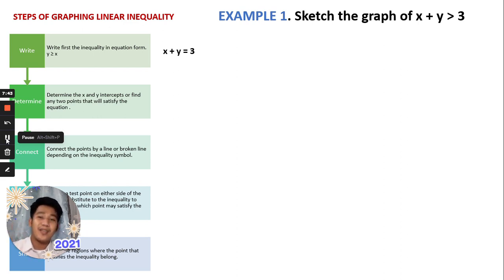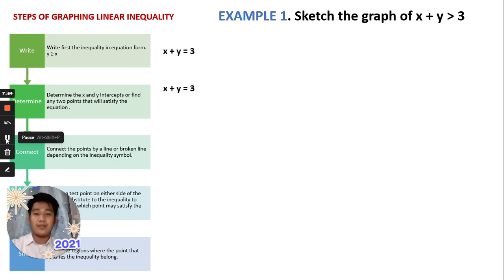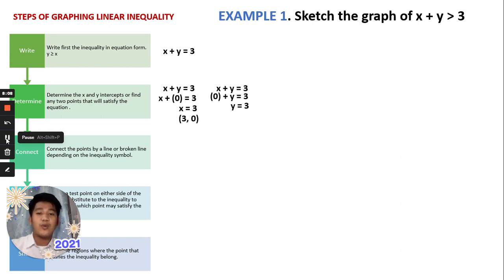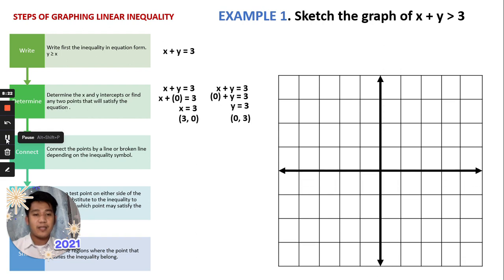Second step: determine the x and y intercepts. To get the x-intercept, let y = 0, giving us x = 3, so the point is (3, 0). To get the y-intercept, let x = 0, giving us y = 3, so the point is (0, 3). We now have two points — (3, 0) and (0, 3) — and we graph them.